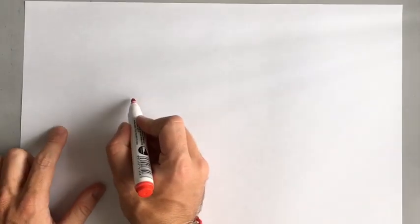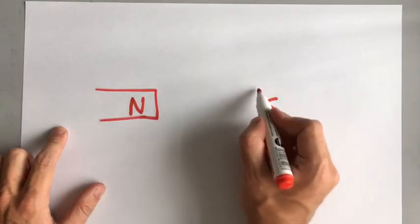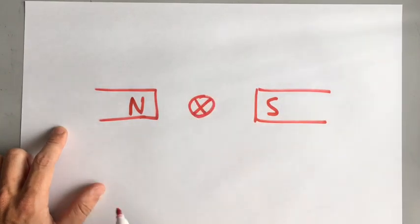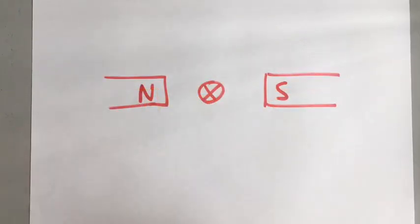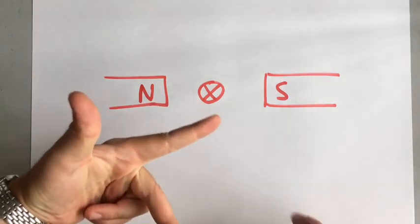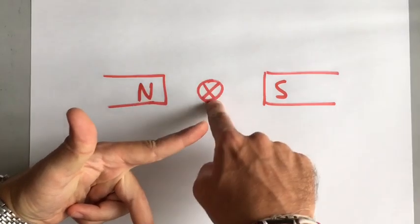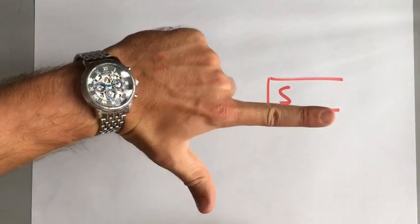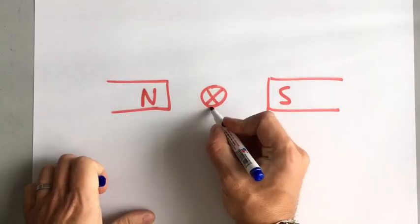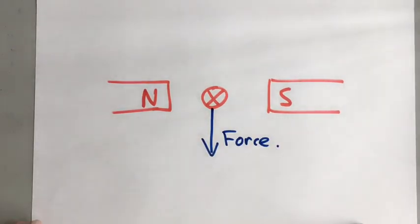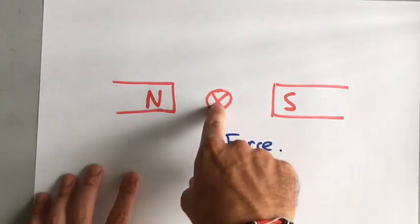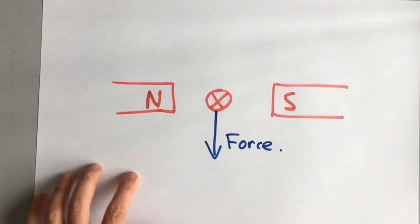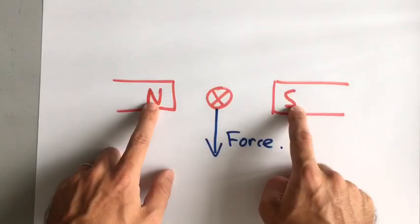Let's try that again using the symbols we've just learned. If we have a magnet with a north pole and a south pole, and a wire with an X symbol — see if you can work out which direction the force is acting. Using our left hand rule: first finger is the magnetic field going from north to south; second finger is current — the X means it's going into the page; and our thumb points in the direction of the force, which is downwards. You can reverse the direction of that force by swapping the magnets around or reversing the current.